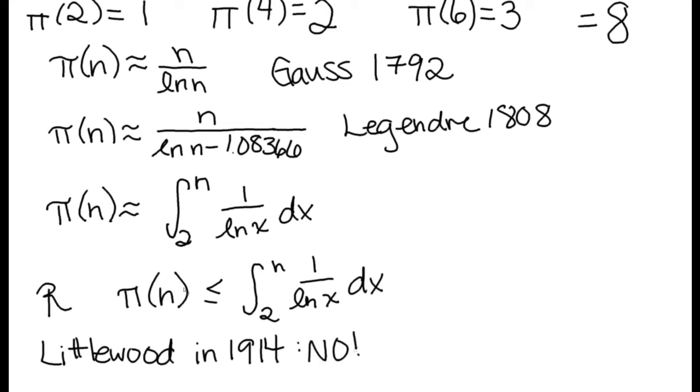He found an n that you could plug in where the number of primes was strictly bigger than this number. If you've taken calculus, you know this is the measurement of an area under this curve. But Littlewood found an n you can plug in where this inequality is not true, where the left-hand side, the number of primes, is strictly bigger than this integral. So that's one thing that was a setback for Ramanujan.